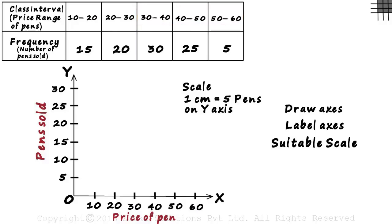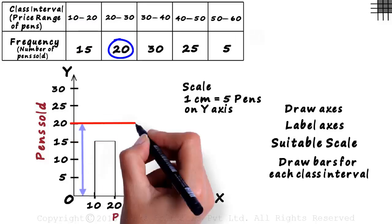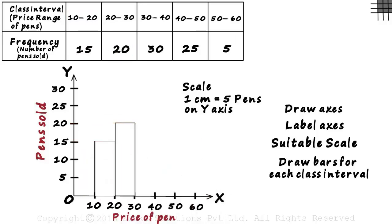That's it! Now we just have to draw appropriate bars for each class interval. For the range 10 to 20, the frequency is 15, so based on the scale, we draw a bar of length 3 centimeters. For a frequency of 20, we draw a bar of length 4 centimeters. And we continue the process till we reach the last range.